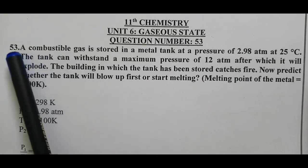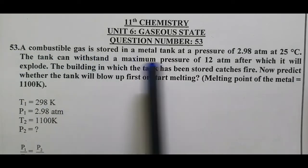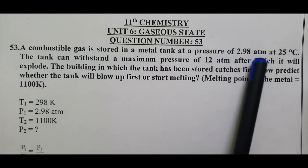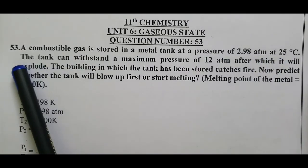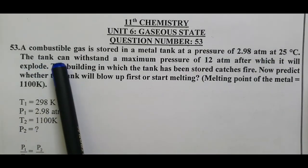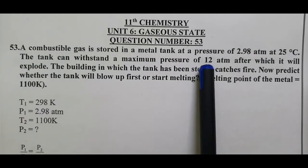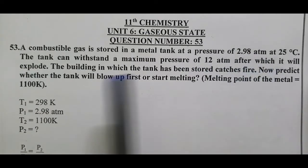Come to the question. A combustible gas is stored in a metal tank at a pressure of 2.98 atm at 25 degrees Celsius. The tank can withstand a maximum pressure of 12 atm after which it will explode.